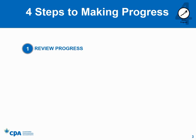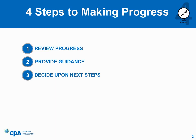Prior to each ongoing meeting with the future CPA, you will want to make sure that you review progress that has been made since your last meeting. At each ongoing meeting, you will then provide guidance to the future CPA with respect to progression, with an emphasis on the enabling competencies. As each ongoing meeting draws to a close, you and the future CPA will decide what needs to happen between that point and the next time you meet. After each ongoing meeting, you will document the meeting in the profession's online practical experience reporting tool, or PERT.